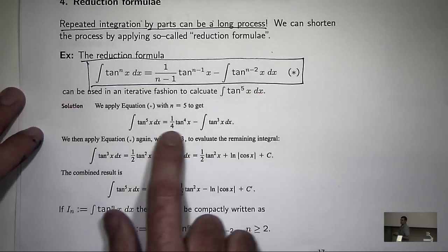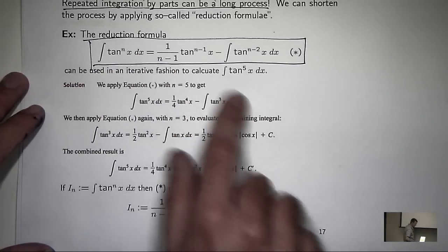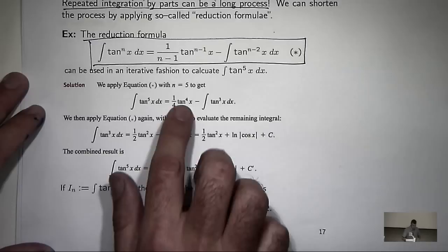So what you do is you go up to the reduction formula, plug in n equals 5, and then you'll get this representation here.